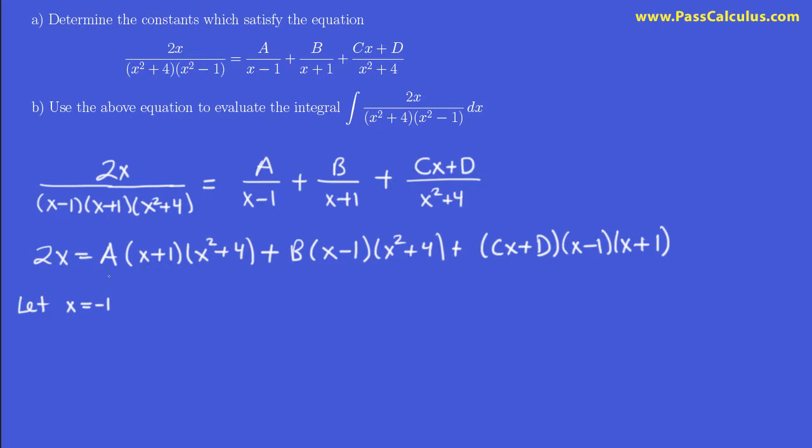That's 2 times negative 1 is negative 2. When I put negative 1 in here, I get 0. So this entire term is wiped out and becomes 0. What about here? Well, the b stays. Negative 1 minus 1 is negative 2. Negative 1 squared is positive 1 plus 4 gives me a 5. And when I put negative 1 in here, this is 0, so this entire term becomes 0.